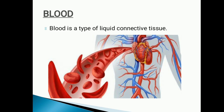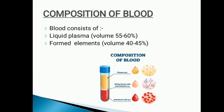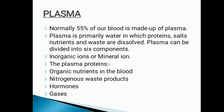We'll soon be providing you these PPTs. The next topic is composition of blood. Blood consists of 55% liquid plasma and 40 to 45% of formed elements. Next we have plasma — plasma is the colorless liquid part of blood in which the blood cells float.